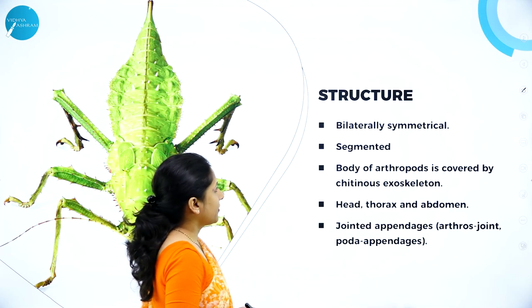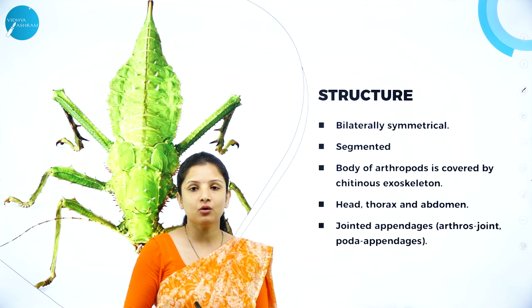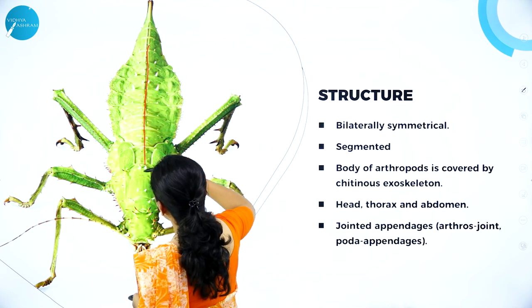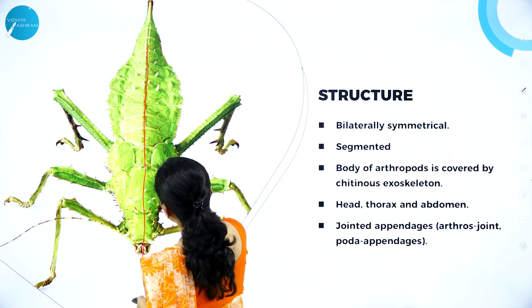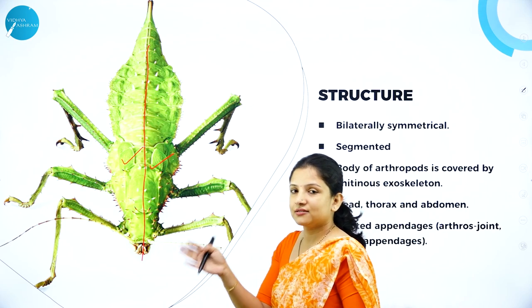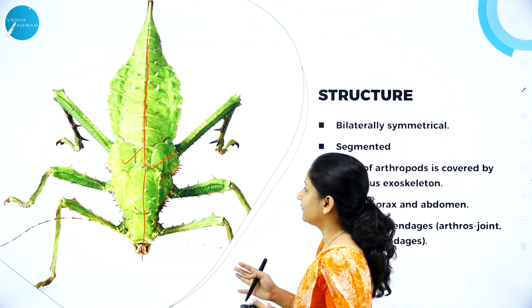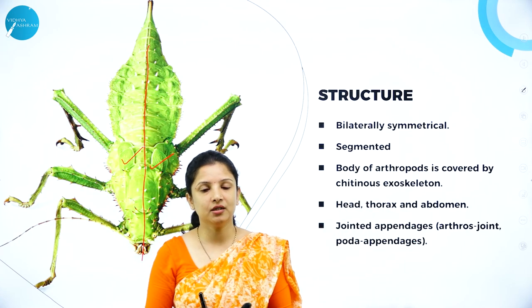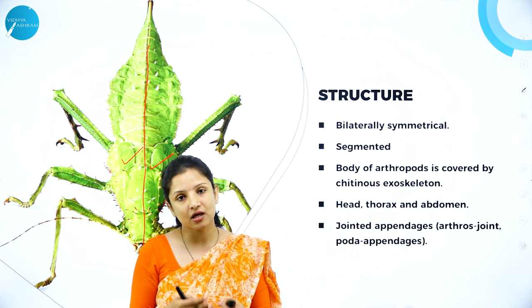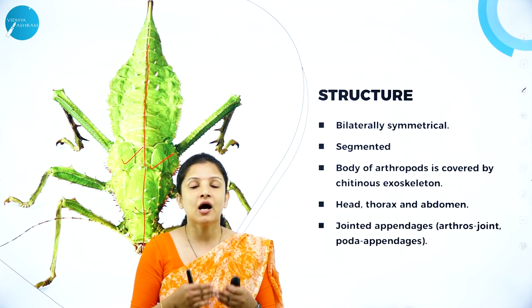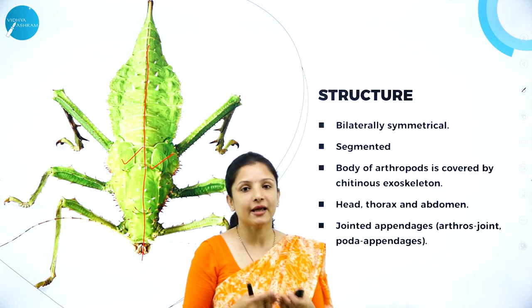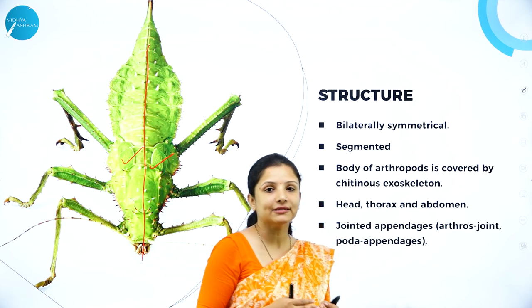Arthropods are bilaterally symmetrical, meaning when you draw a line exactly at the center of the insect, one half looks exactly similar to the other, or the right side is the mirror image of the left side. The name arthropod is given because 'arthro' means jointed and 'poda' means appendages or feet. So they have jointed appendages, which is why they are called arthropods.